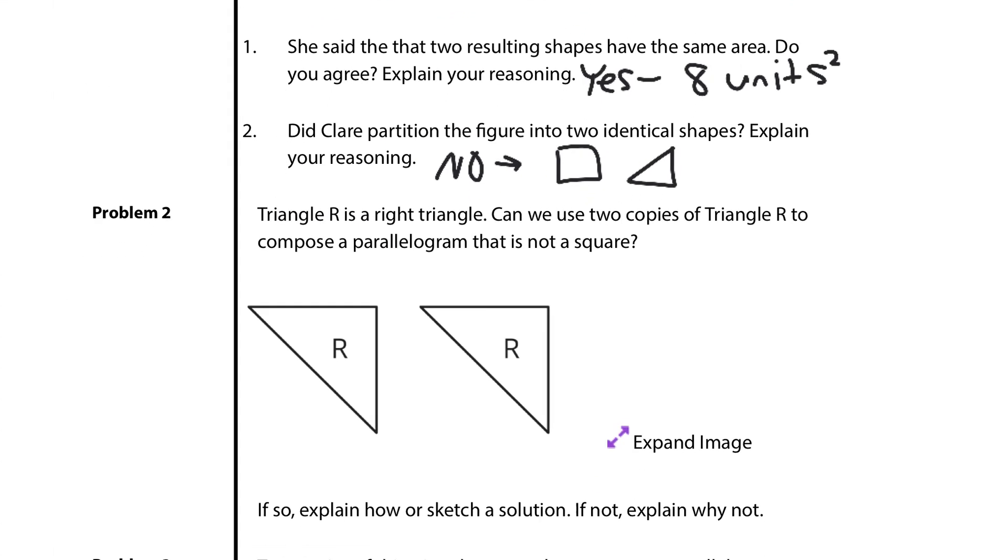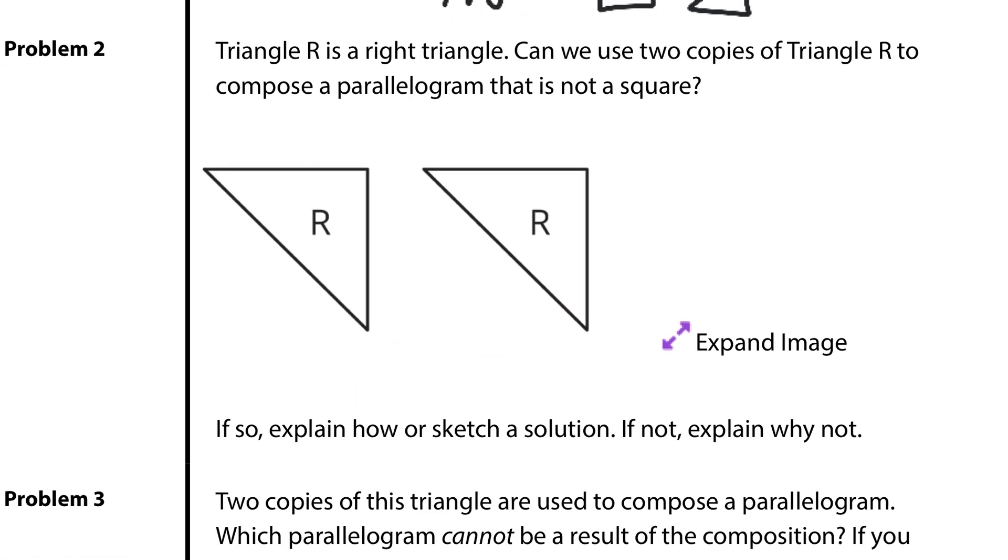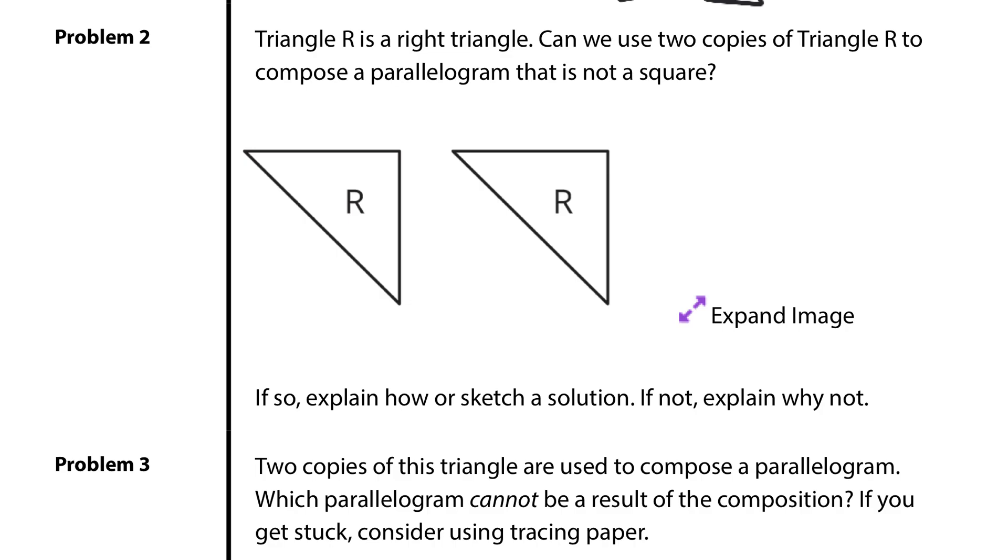In question 2, triangle R is a right triangle. Can we use two copies of triangle R to compose a parallelogram that is not a square? If so, explain how or sketch a solution. If not, explain why not. Well, there's at least one parallelogram we could do. If I take, and it might be a little bit smaller in my drawing here, but if I take this R and then I put this R on top going this way, those are identical enough and that is not a square.